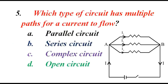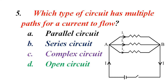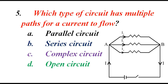Which type of circuit has multiple paths for current to flow? A. Parallel circuit. B. Series circuit. C. Complex circuit. D. Open circuit. The correct answer is A. Parallel circuit.